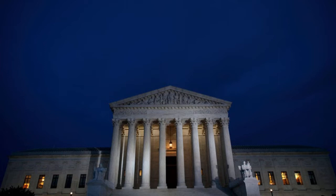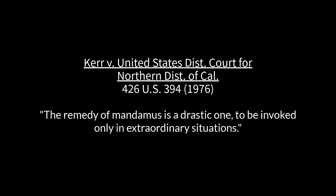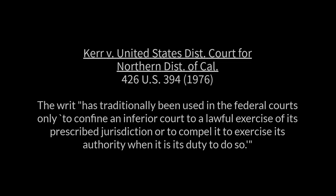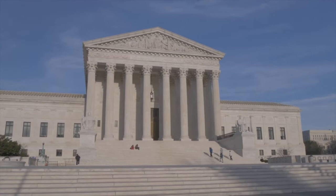In modern federal jurisprudence, a writ of mandamus is available to petitioners. The United States Supreme Court in the 1976 case of Kerr v. United States Judicial Court defined the standard, and later in 2004, the Supreme Court in Cheney v. United States Judicial Court established a three-pronged requirement before a writ of mandamus could be issued.